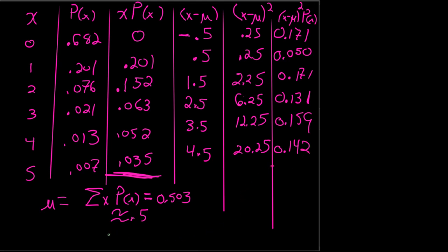And so my variance is going to be the sum of x minus mu squared times the probability of x, which is the total of this column. And so I add up this column, 0.171 plus 0.05 plus 0.171 plus 0.131 plus 0.159 plus 0.142. And I get, for my variance, 0.82. They want everything to one decimal place, so 0.8. And if I take the square root of that, sigma is the square root of that, I get roughly 0.9.